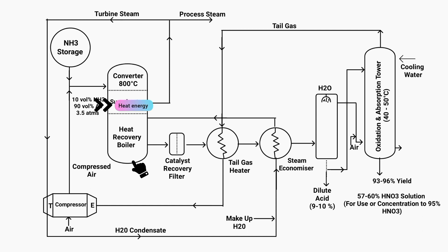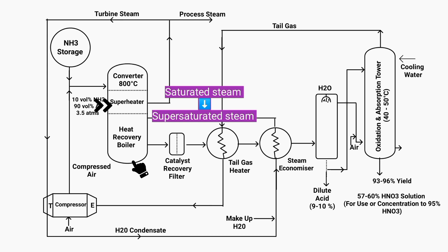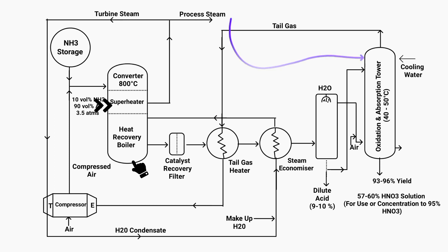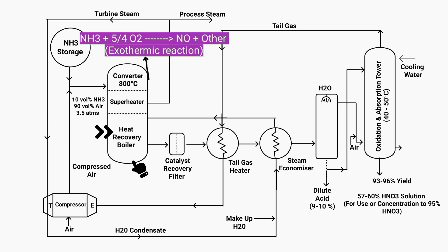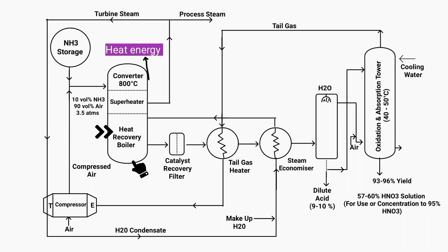The superheater section passes heat energy to the converter, and also converts saturated steam into superheated steam, which is used as process steam and turbine steam. Process steam is used whenever steam energy is required in the process, while turbine steam is used to drive the turbine. The heat recovery boiler section converts heat energy into steam energy. When ammonia and oxygen react in the converter section, nitric oxide gas is formed and heat energy is produced, which is sent to the heat recovery boiler where water is converted into steam.